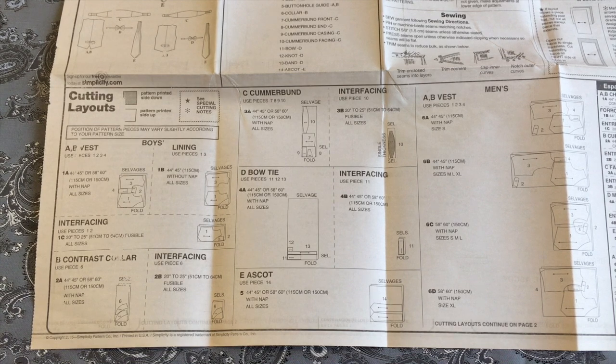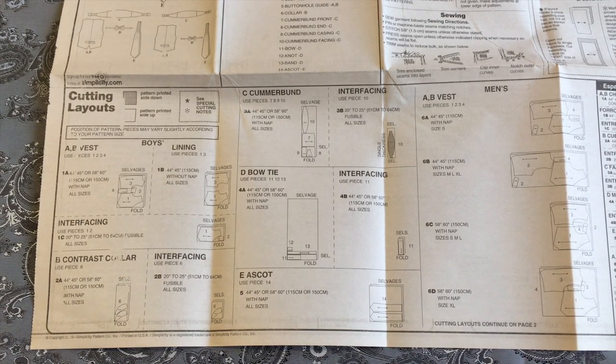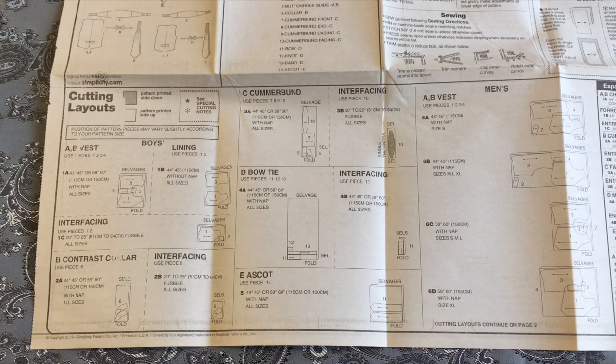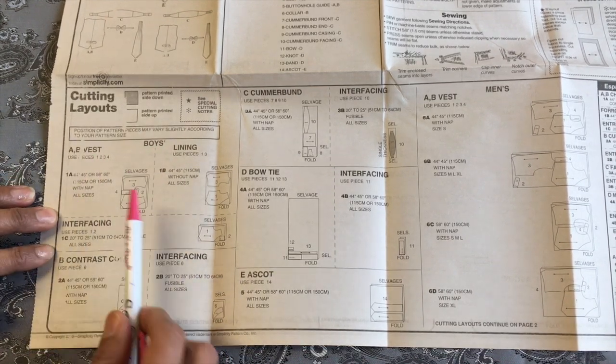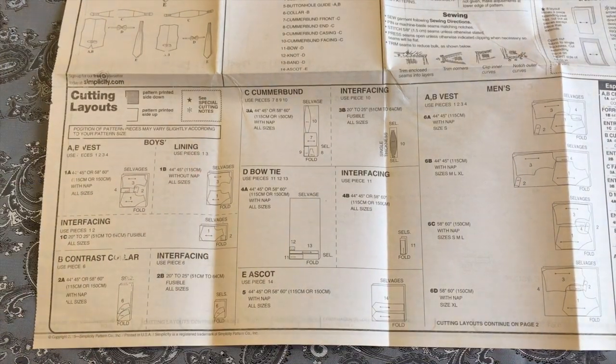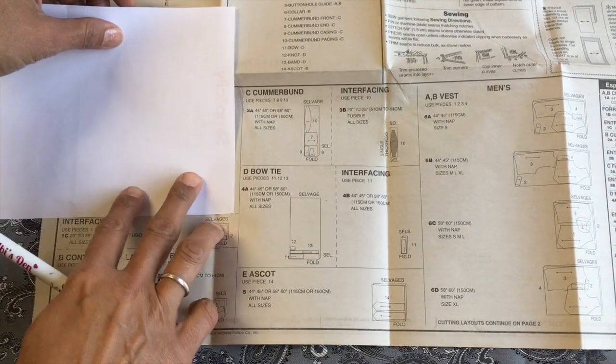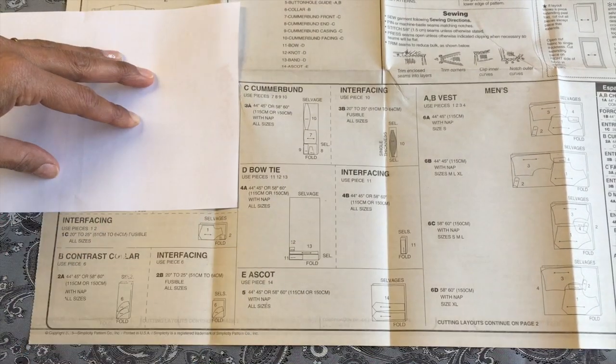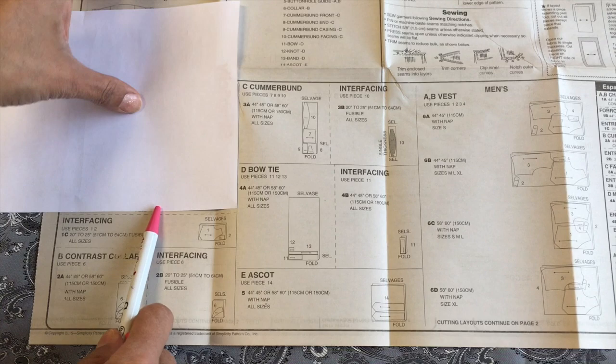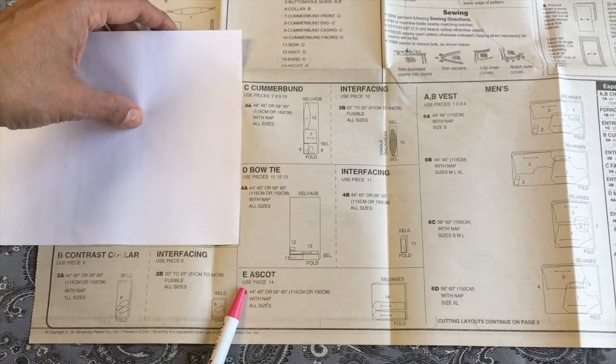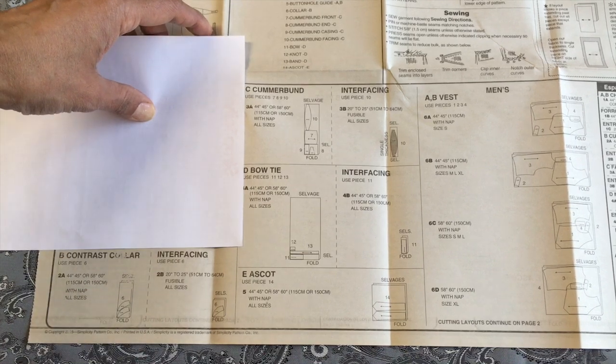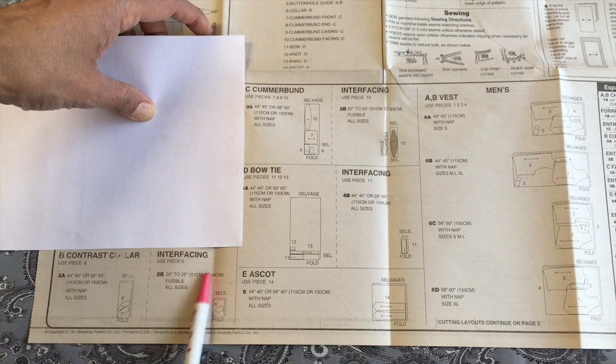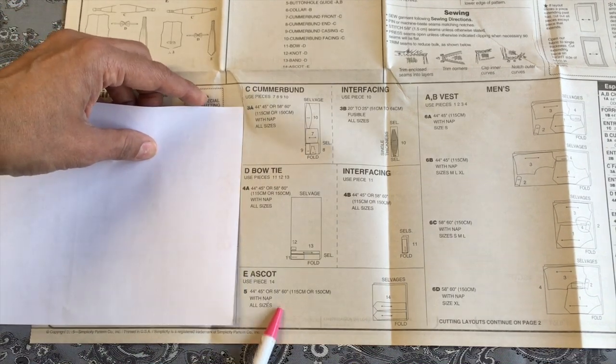So we know now the pattern pieces are going to be laid either face up or face down. We need to work out which section we're working on. Are we working on the vest, the collar, the bow tie, the ascot or the cummerbund? So this section here is for the boys vest, so that's not us. Then there's the contrasting collar, well we're not making a collar on ours. Then we've got the cummerbund, we're not making a cummerbund.